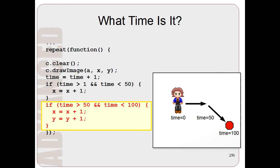Now let's say after moving to the right, we want the person to move diagonally, down and to the right. So to do that, we write these lines of code here. And basically what these lines of code say is that when the time is between 50 and 100, move to the right and down. So you can see that in the lines of code here.